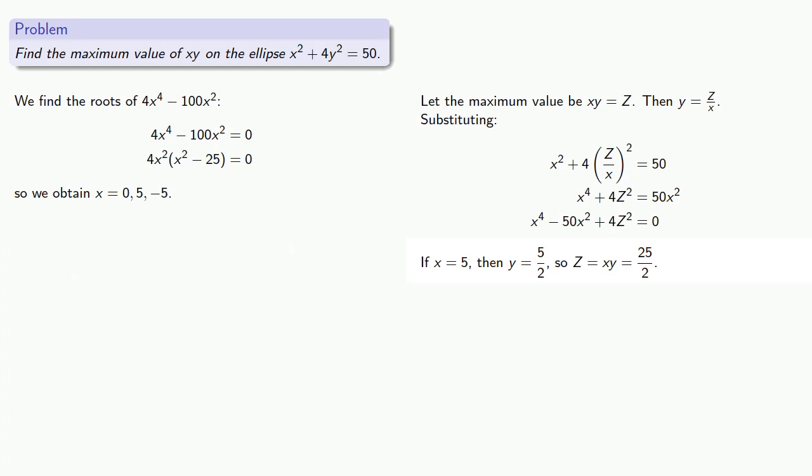and again we want to check to see if x equals 5 is a double root of our equation. We see that both x equals 5 and x equals negative 5 are double roots, and so these correspond to our maximum values.